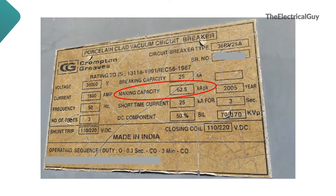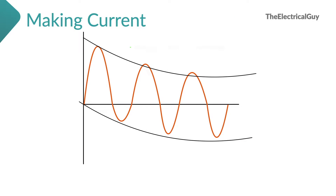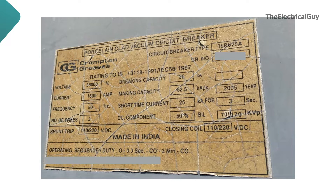Next is making capacity. If the breaker closes during an existing fault condition, current may increase to a very high value during the first cycle, remaining in the system for a very short time. Therefore, the breaker must withstand this high current and the mechanical forces caused by it. This current is called short-circuit making current or rated peak withstand current. It is generally 2.5 times the rated short-circuit current at 50 Hz. So multiplying 2.5 with 25 kA gives us 62.5 kA as the making current.